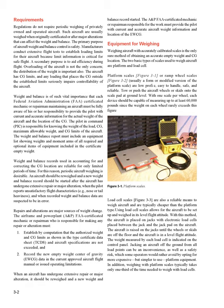Equipment for Weighing: Weighing aircraft with accurately calibrated scales is the only sure method of obtaining an accurate empty weight and CG location. The two basic types of scales used to weigh aircraft are platform and load cell. Platform scales (figure 3-1), or ramp wheel scales (figure 3-2), usually a form or modified version of the platform scale, are low-profile, easy to handle, safe, and reliable. Tow or push the aircraft wheels or skids onto the scale pad at ground level. With one scale per wheel, each device should be capable of measuring up to at least 60,000 pounds, since the weight on each wheel rarely exceeds this figure.